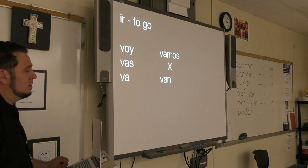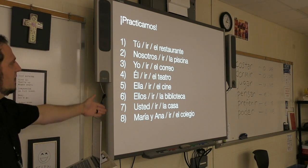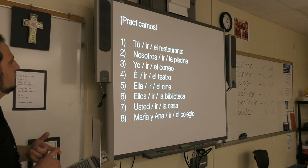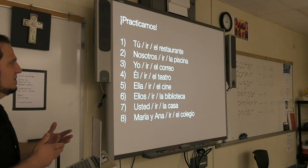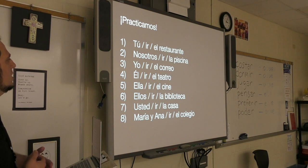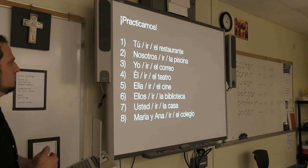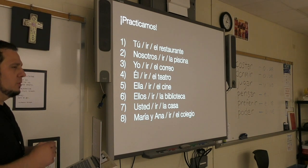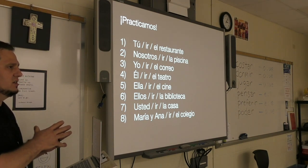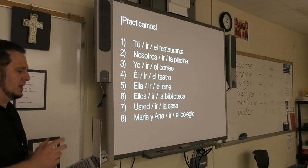Vamos a practicar — we're going to do some practice sentences. I haven't conjugated or done any contractions yet, but I want you to see the elements of each sentence. Sentence one: tú, ir, el restaurante — the restaurant. Sentence five: ella, ir, el cine — the movie theater. Sentence seven: usted, ir, la casa. Remember: masculine singular destination uses al, feminine singular uses a la.